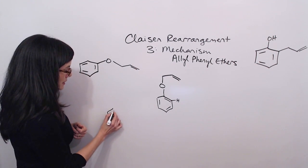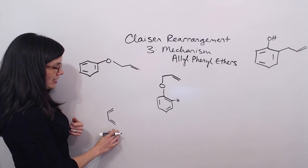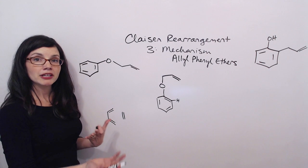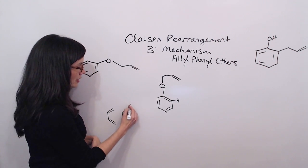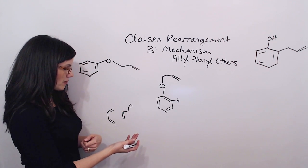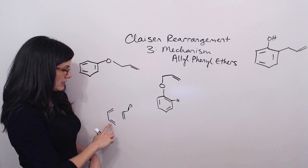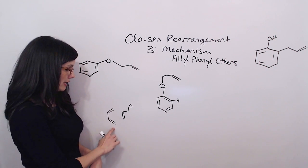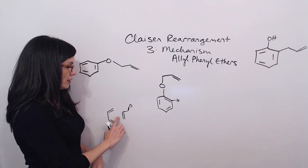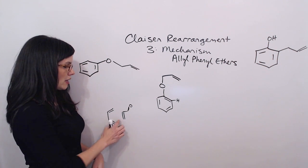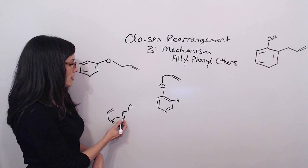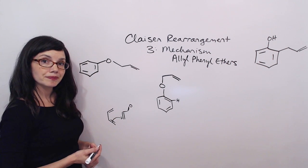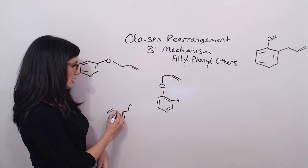In Diels-Alder, we had a conjugated diene. And we also had a double bond or a triple bond with an electron withdrawing group attached. And what would happen is that this diene would send its electrons out to attack. It would act as the nucleophile. And it would attack this bond. But it would specifically attack the carbon that was farthest away from the electron withdrawing group. And then the electrons would start getting pushed away.